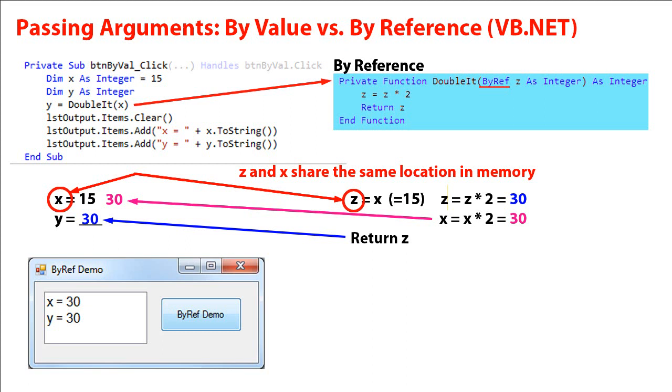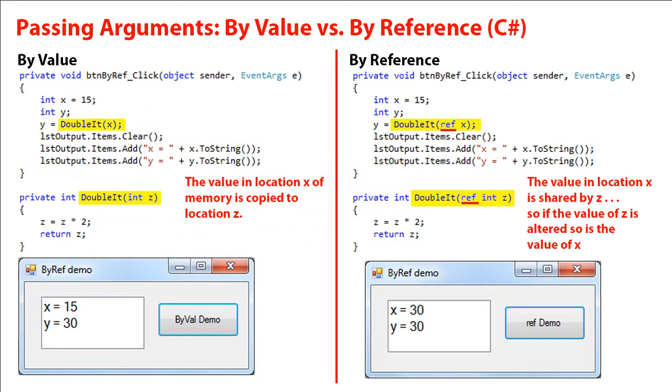Let's take a look at it in C sharp. So here in C sharp, just as we had before, I've got integers of x and y. x is 15. I'm passing x and double it to my function called double it. It's going to return an integer value. It's getting the value of x into z. And so the value that's in location x of memory is copied to location z.